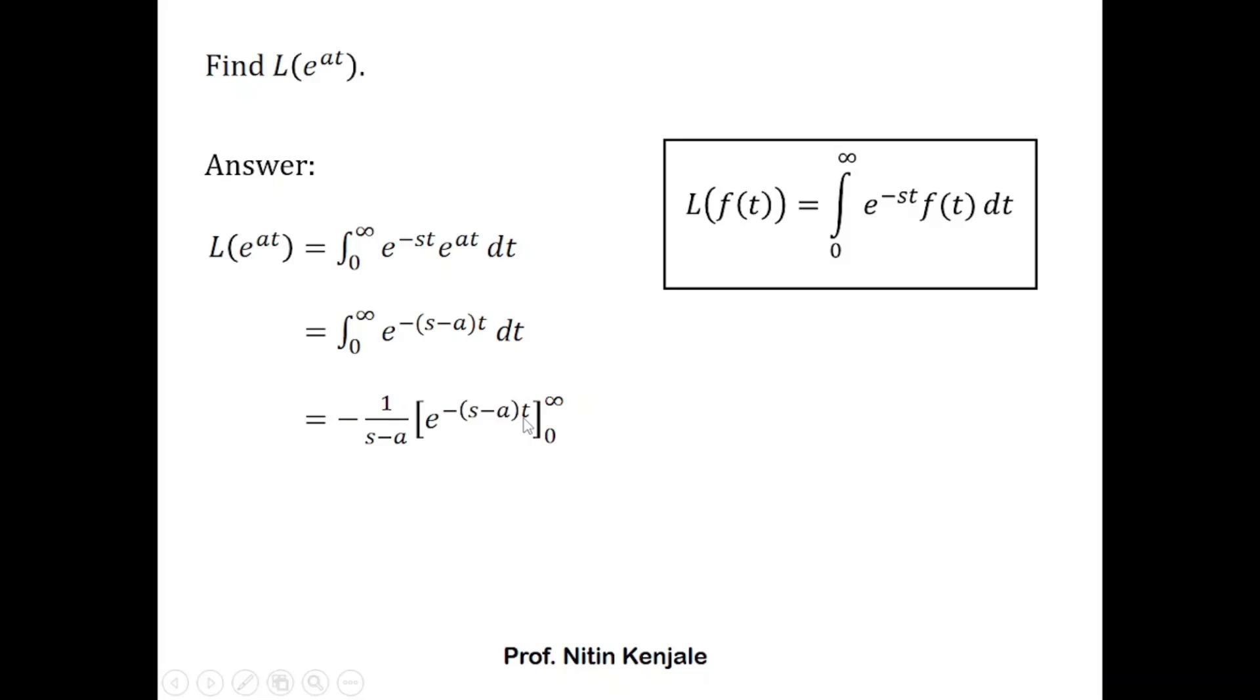Now we substitute these limits in t, so we have e raised to minus infinity that is 0, and e raised to 0 is 1. This minus into minus becomes plus, so we are left with 1 upon s minus a as the Laplace transform of e raised to at.